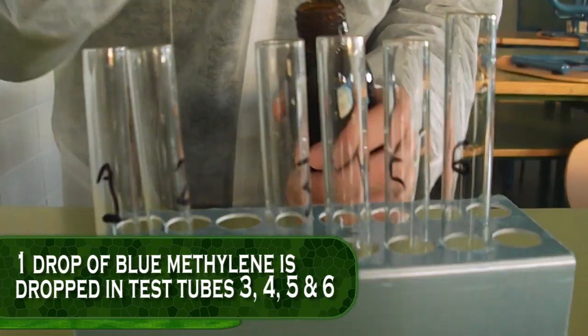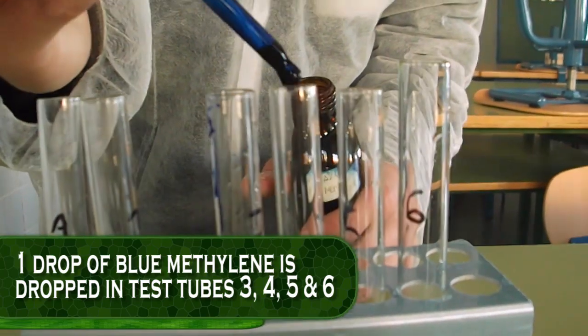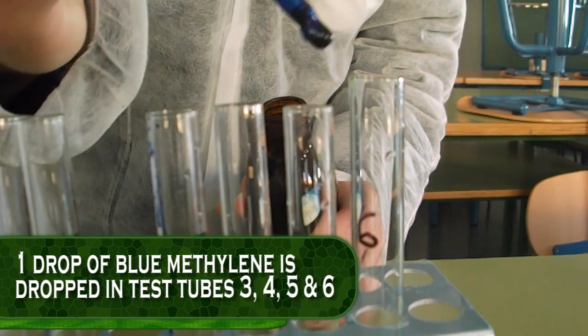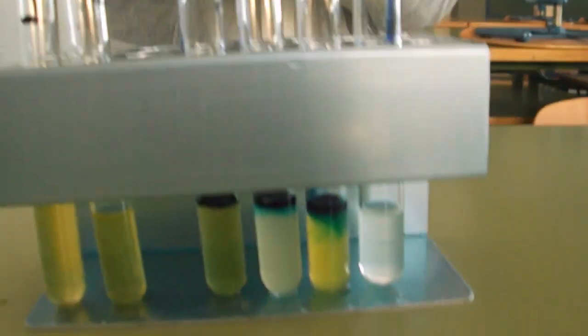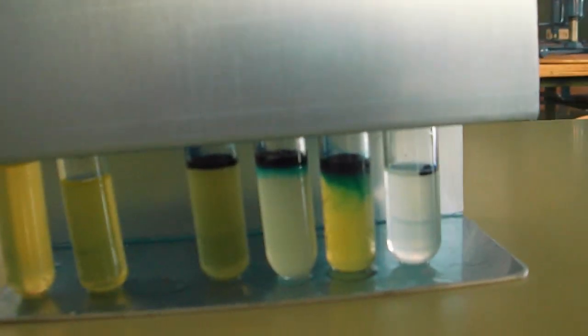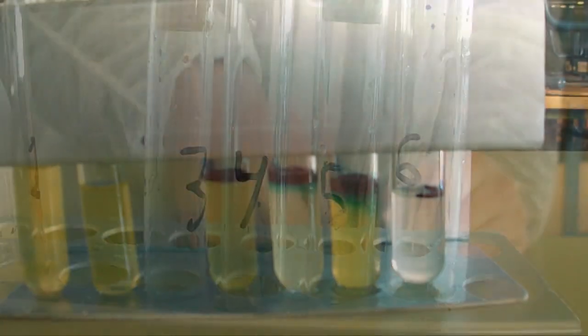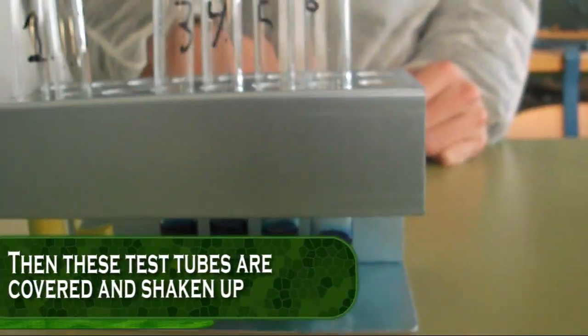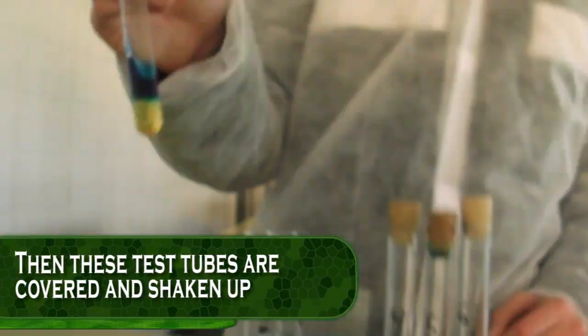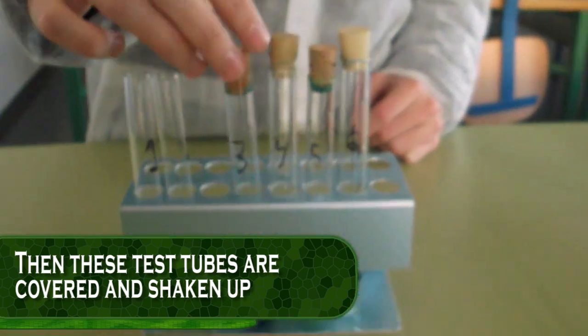One drop of blue methylene is dropped in test tubes 3, 4, 5 and 6. Then these test tubes are covered and shaken up.